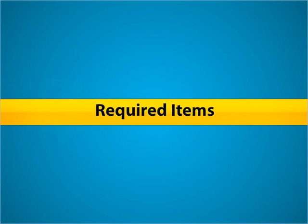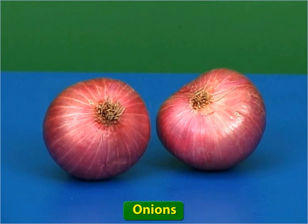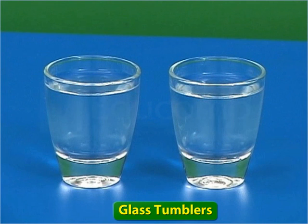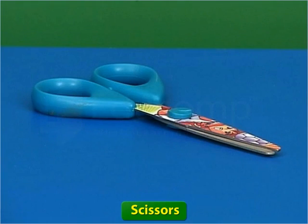To study the growth in the root tip of the onion, you need two same-sized onion bulbs, two glass tumblers filled with water, and a pair of scissors.